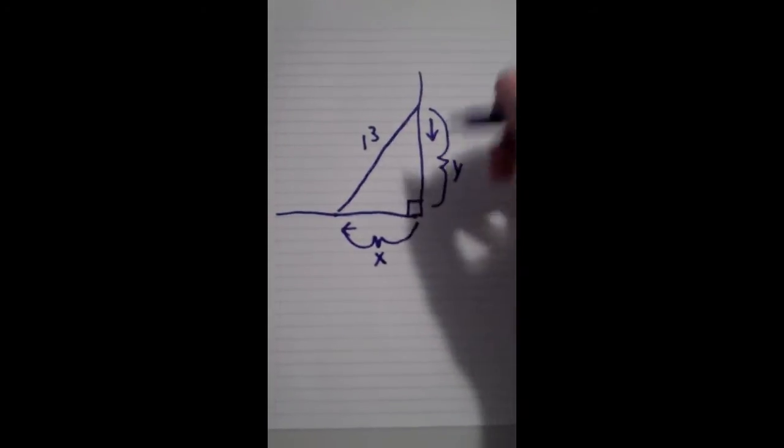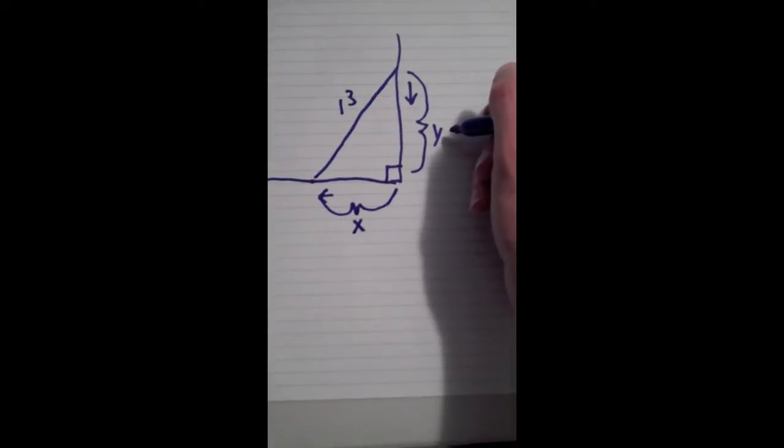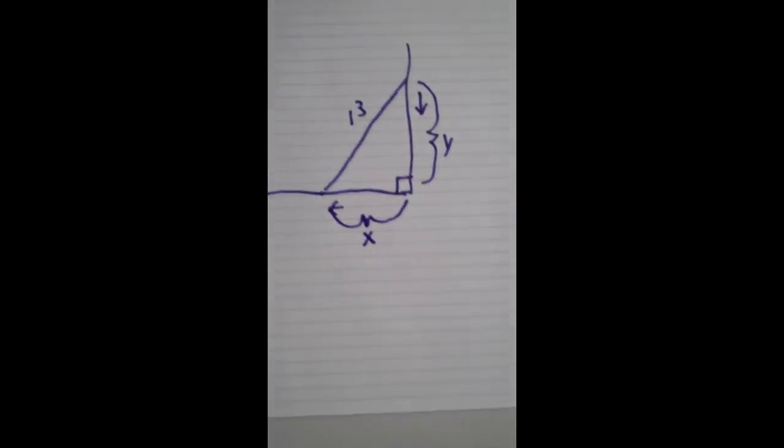So basically the rate at which the top of the ladder is falling is like dy/dt. It's the rate of change of y, and they want us to find the rate of change of x with respect to time.